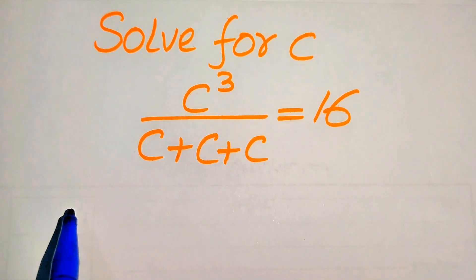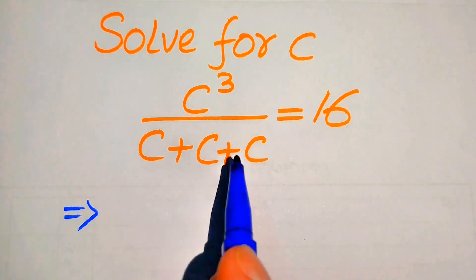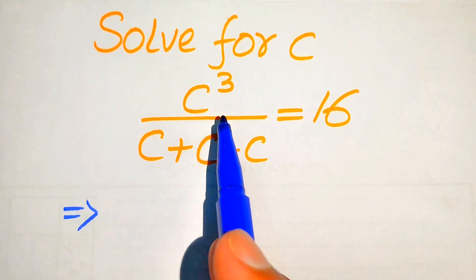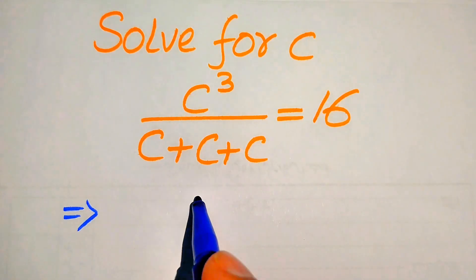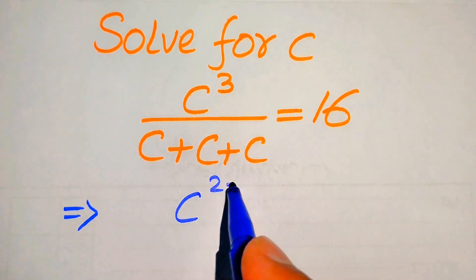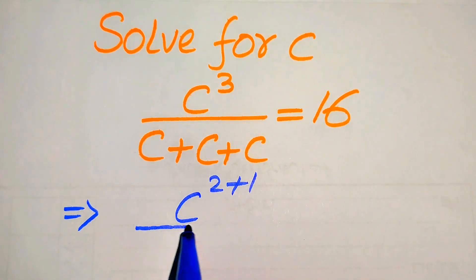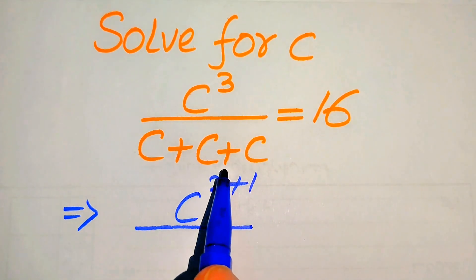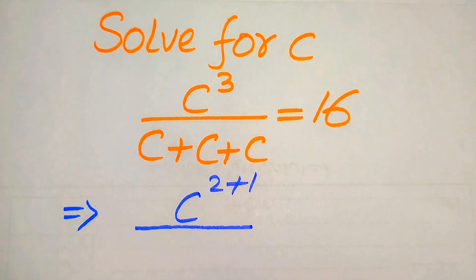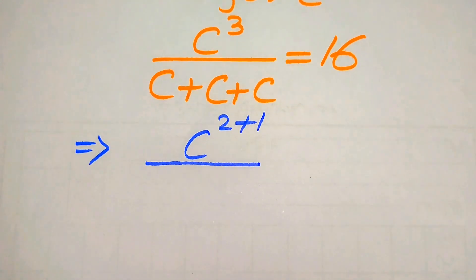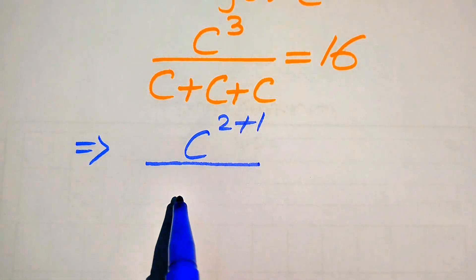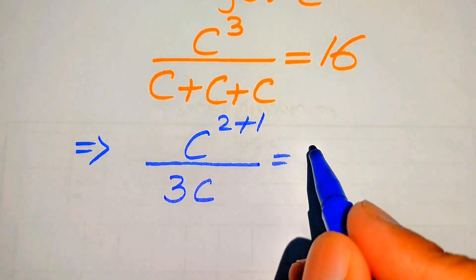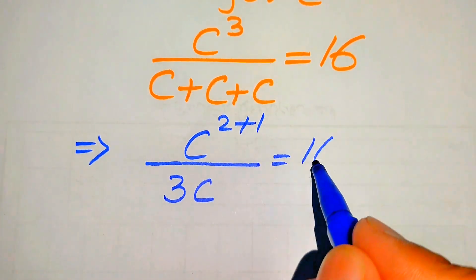The very first thing we are going to do is focus on the exponent of this term, and its exponent is 3. So we break this 3 as c to the power of 2 plus 1, and it is divided by — you see that c is added 3 times — it means that we need to add the coefficients of the c and it will become 3 times of c, and it is equals to 16.